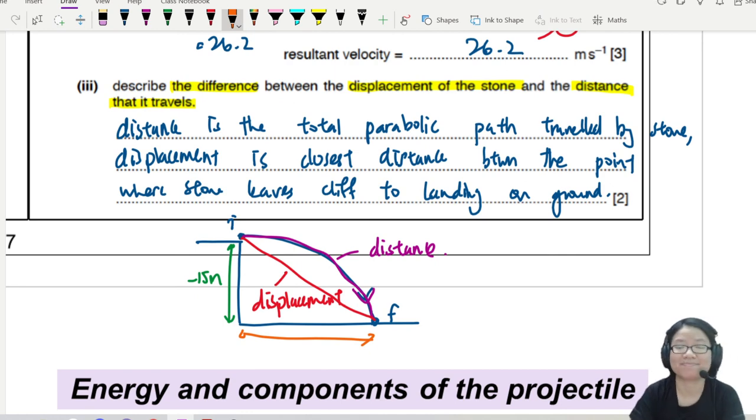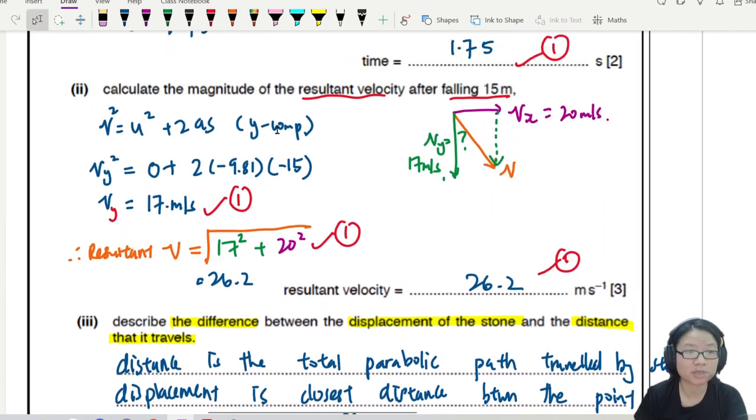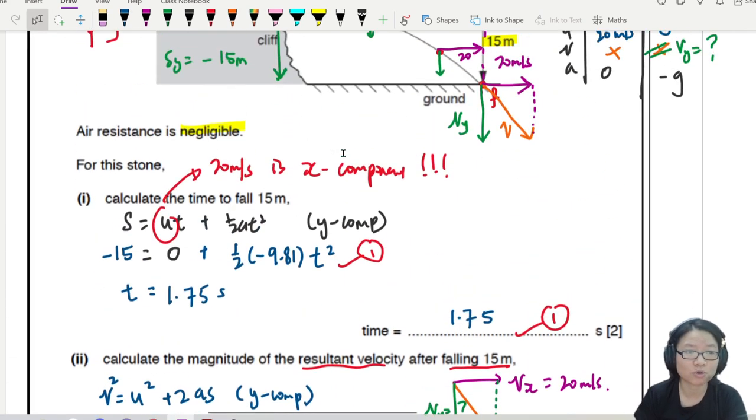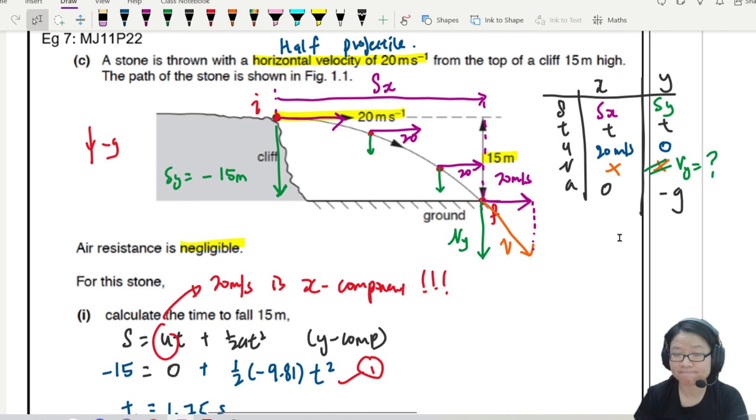Just SUVAT the X component. Use the values of X component. So that's a simple calculation question for parabola. Not complicated. Just make sure if you use Y, use Y alone. Don't involve X. But if you want to find the distance traveled, it will be the parabolic length. And then the displacement will be the closest distance from I to F.